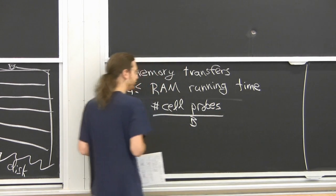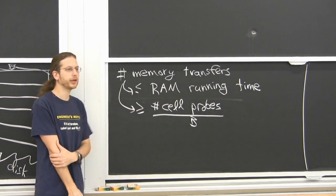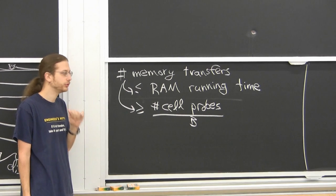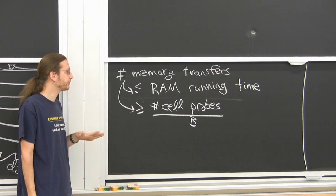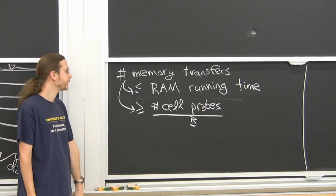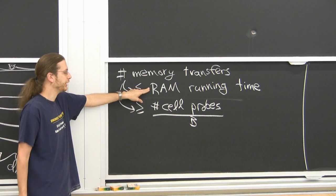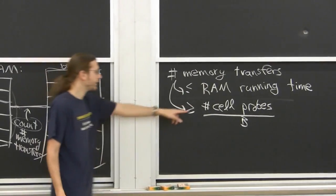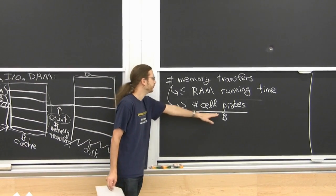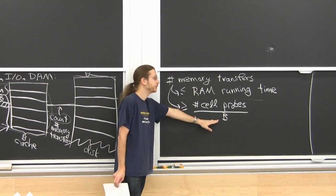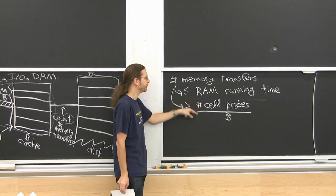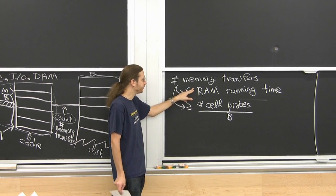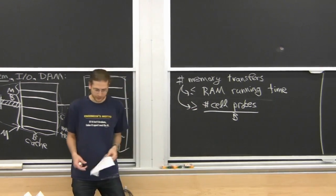There's also a lower bound: the number of memory transfers is at least the number of cell probes divided by B. The cell probe model counts how many words you have to read to do a data structure operation — it's a lower bound on RAM data structures. Here we're counting blocks instead of words, so at best we improve by a factor of B. This is the lower bound; the RAM running time is the upper bound. There's roughly a factor of B slop, and we want to get closer to the lower bound.